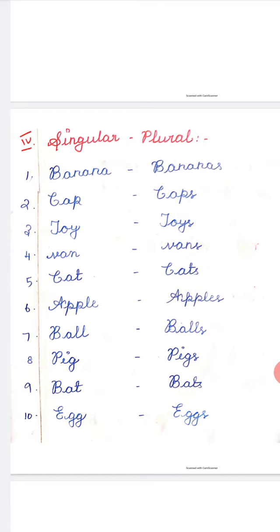Third one, toy, toys, van, vans, cat, cats, apple, apples, ball, balls, pig, pigs, bat, bats, egg, eggs. These are the singular and plural.